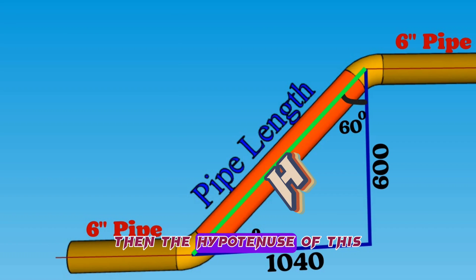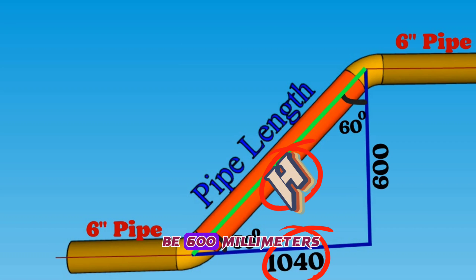Then the hypotenuse of this right-angle triangle will be H, the base side will be 1040 millimeters, and perpendicular side will be 600 millimeters. Let's find out the length of the H hypotenuse of this right-angle triangle.